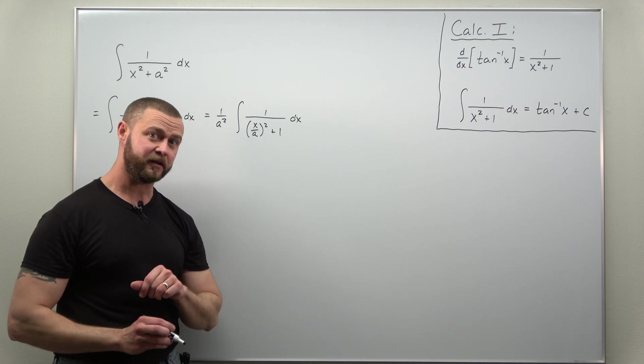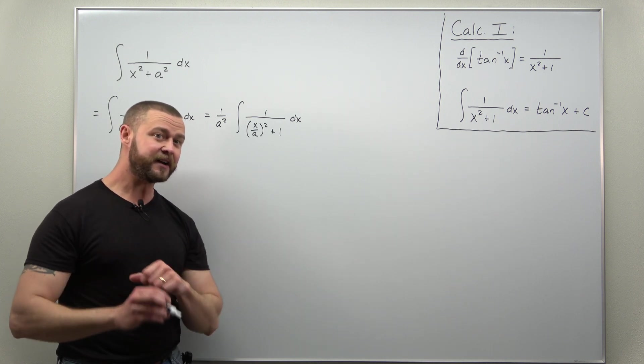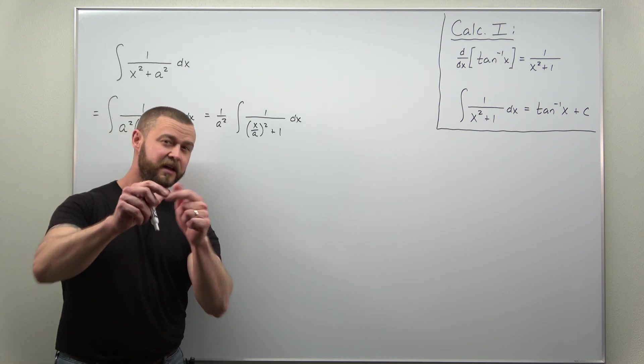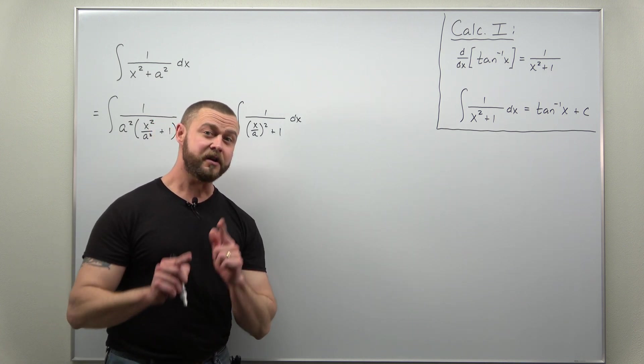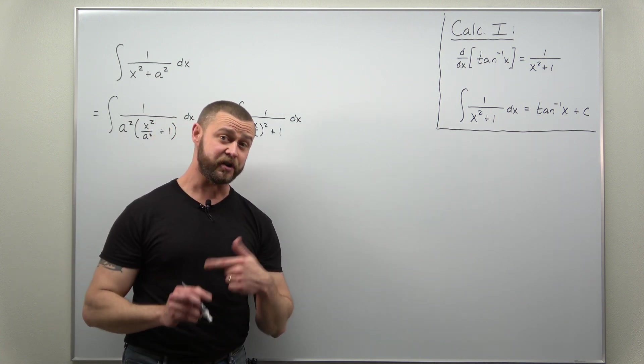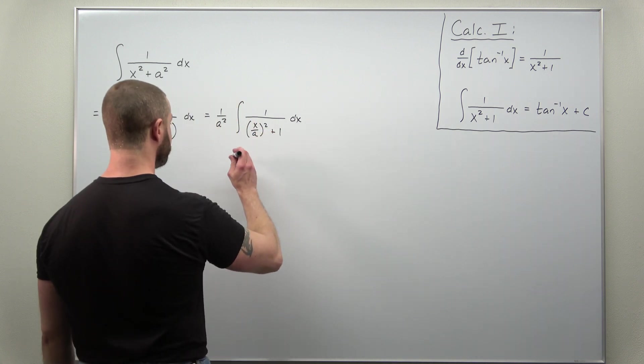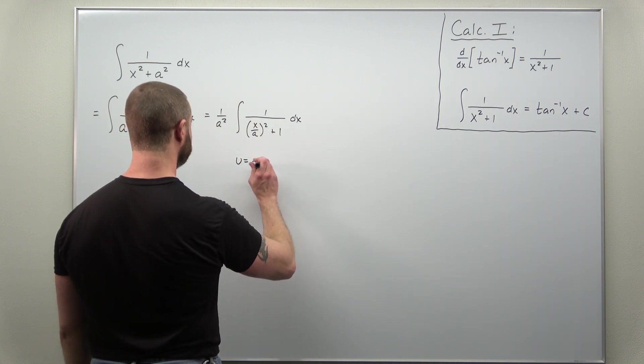And now this looks a little bit closer to our basic antiderivative statement. There we have the 1, but not x squared but rather x over a squared. Notice now we have a set of parentheses—what's inside the parentheses, the inner function, might be a good choice for a substitution.